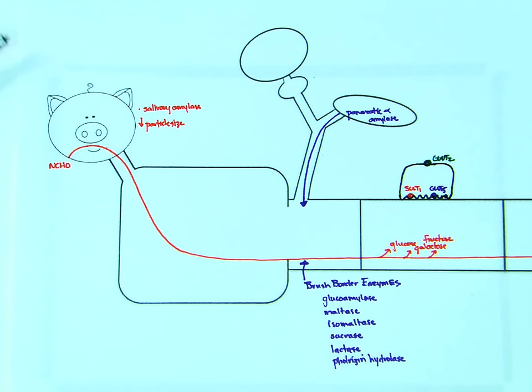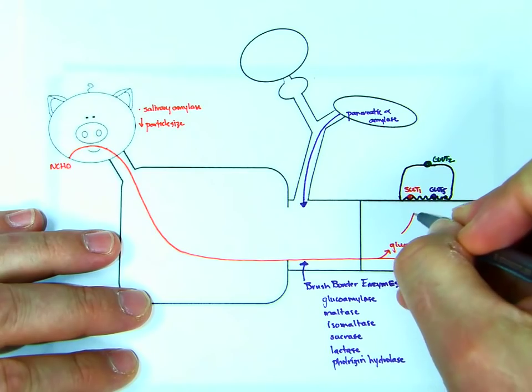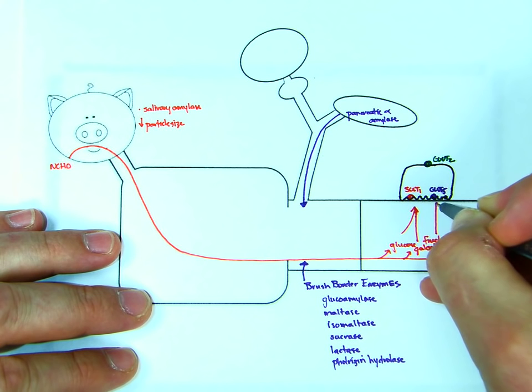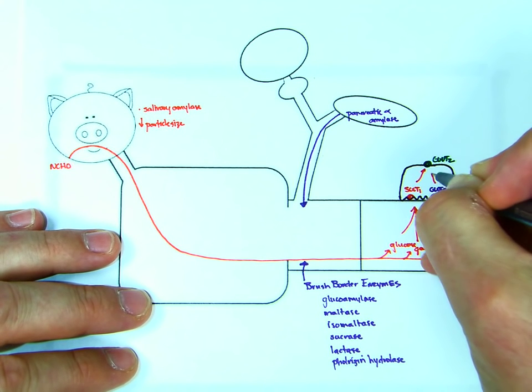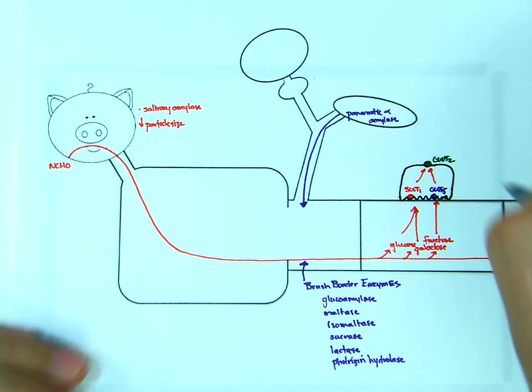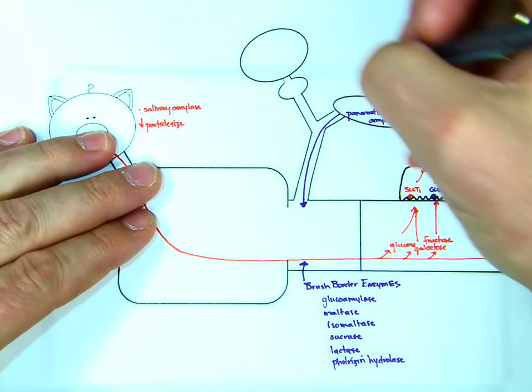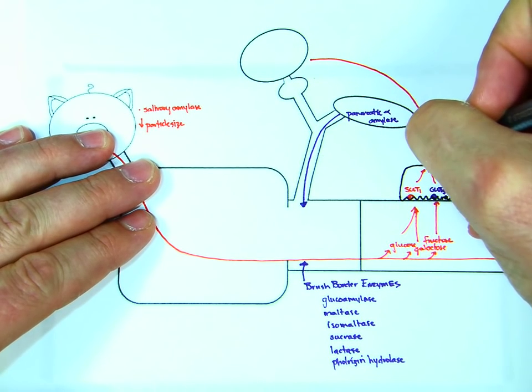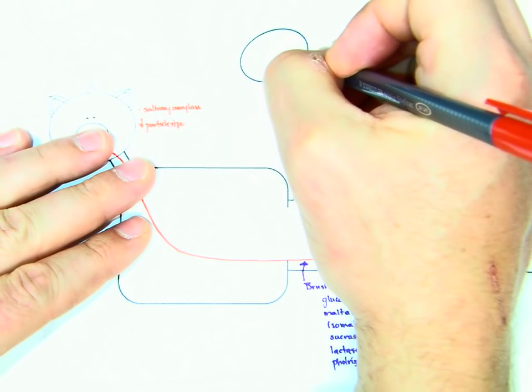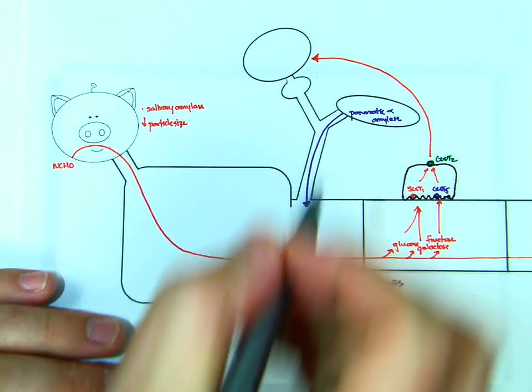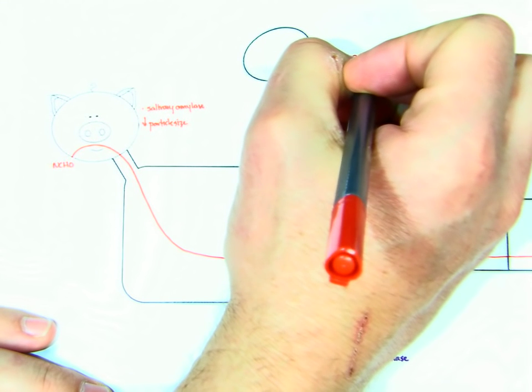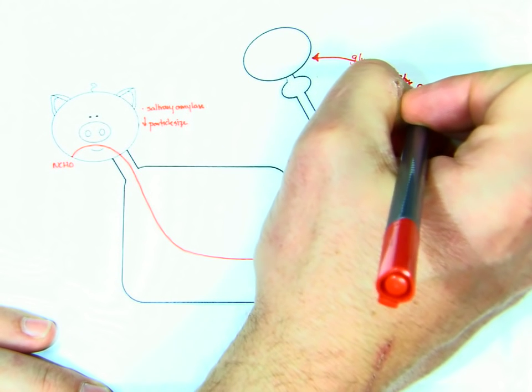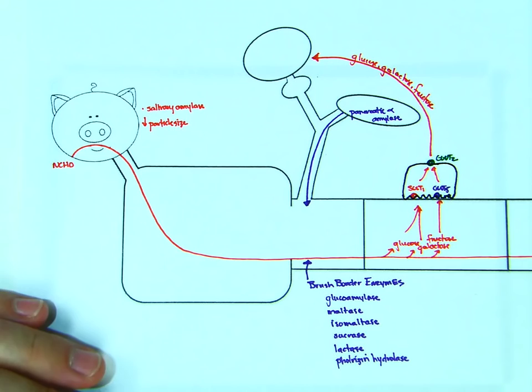And so these guys are going to get absorbed, and then from there they're going to go to the blood, and in the blood they're going to travel to the liver. So, still doing good. Glucose, galactose, and fructose all travel to the liver.